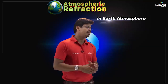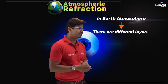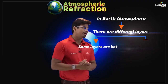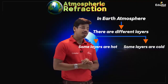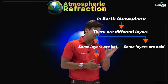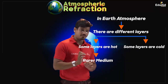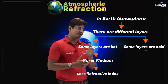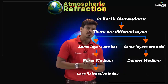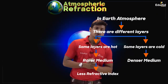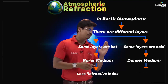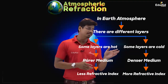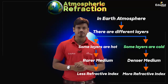In our earth's atmosphere there are different layers of air — some hot, some cold. Hotter layers serve as the optically rarer medium, so their refractive index is less. Cooler layers serve as the optically denser medium, so their refractive index is more. Refraction of light caused by these layers is called atmospheric refraction.